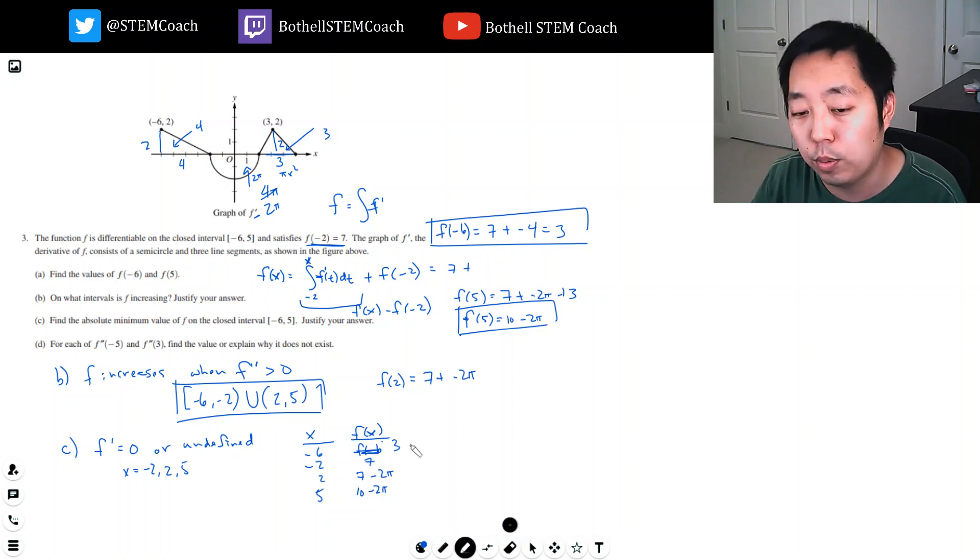So this is three, this is seven. So it can't be this one. 10 minus two pi. Pi is like 3.1, so 6.2. 10 minus 6.2 is like three point something. So it's still bigger than this. Two times pi is like six point something. Seven minus six point something is like less than one. So this one has to be the smallest one. So the absolute minimum value is here.